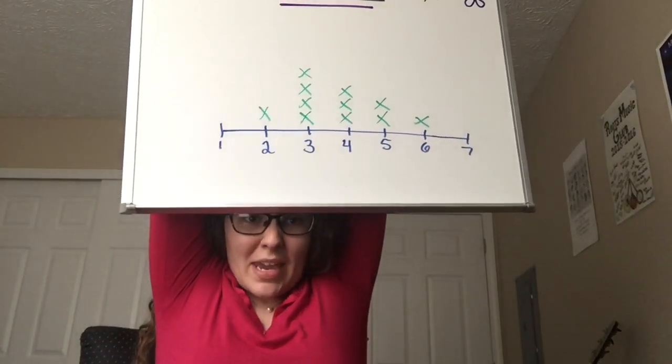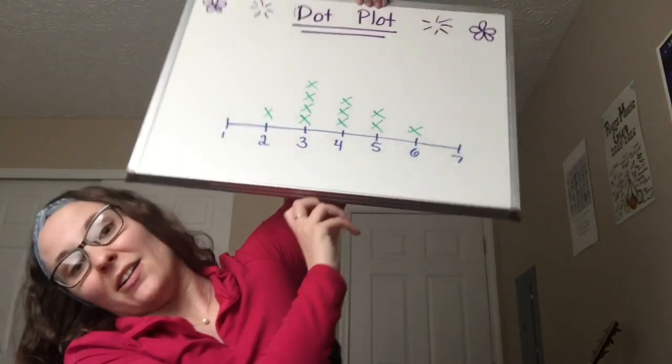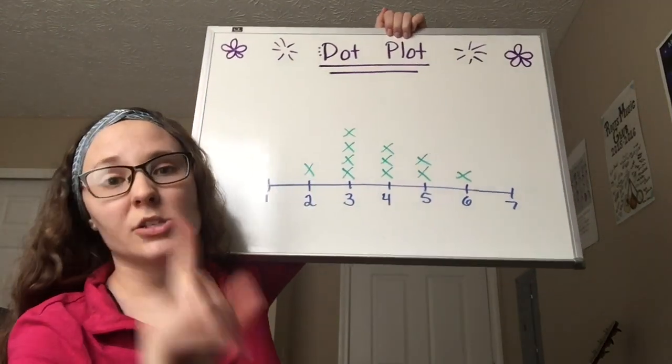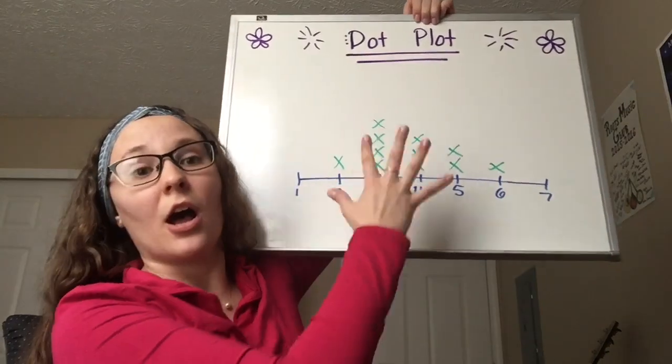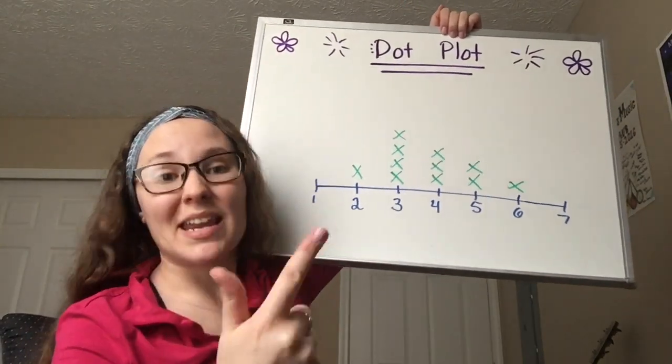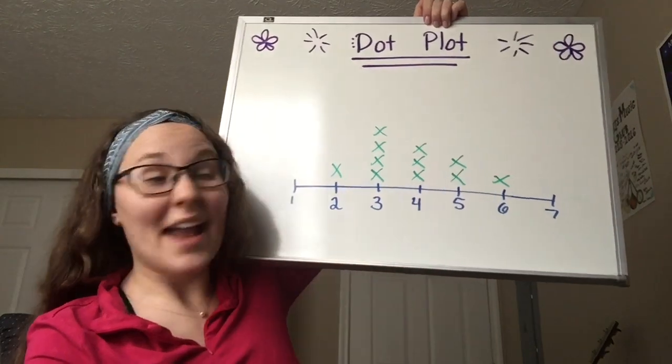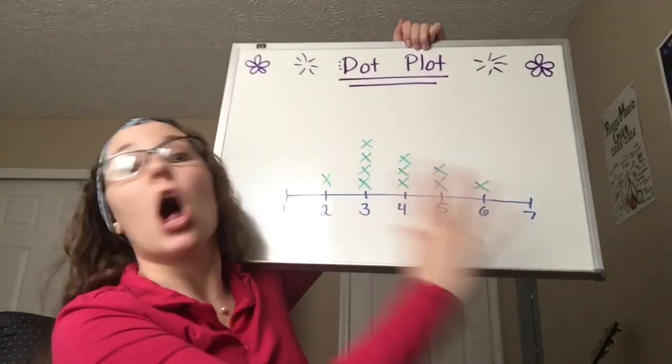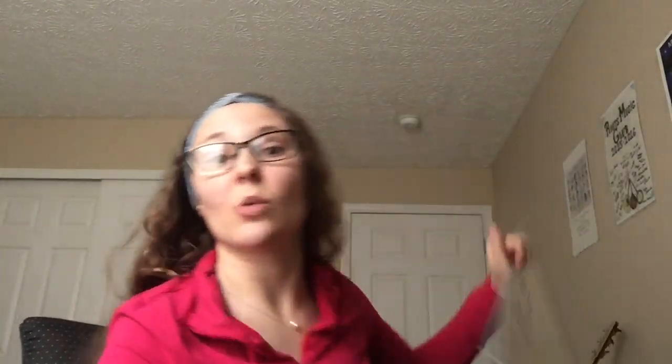Next. We could calculate the mean or the median by writing out the data set. But, if you have a dot plot, no answer will ever be cannot be determined. On a dot plot, you can find any answer that you will need. Mean, median, mode, range, spread, minimum, maximum, shape of data, peak of data. All of it can be answered. The only one that you will ever say cannot be determined is on a histogram.